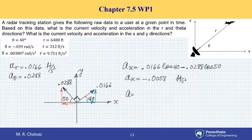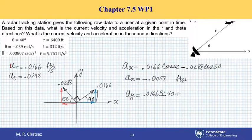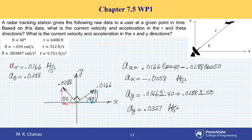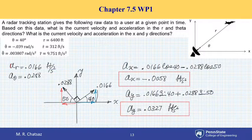In the Y direction, A_y equals 0.0166 times sine of 40, plus the other vertical component, 0.0288 times sine of 50. Doing this numerical calculation yields 0.0327 ft/s². So those are the two rectangular components of acceleration, as requested.